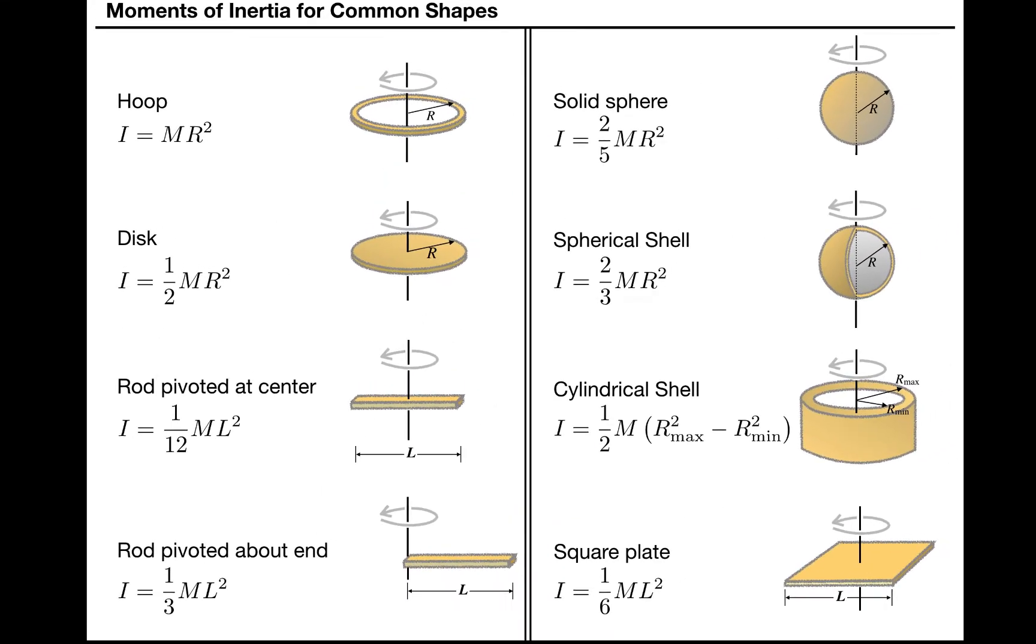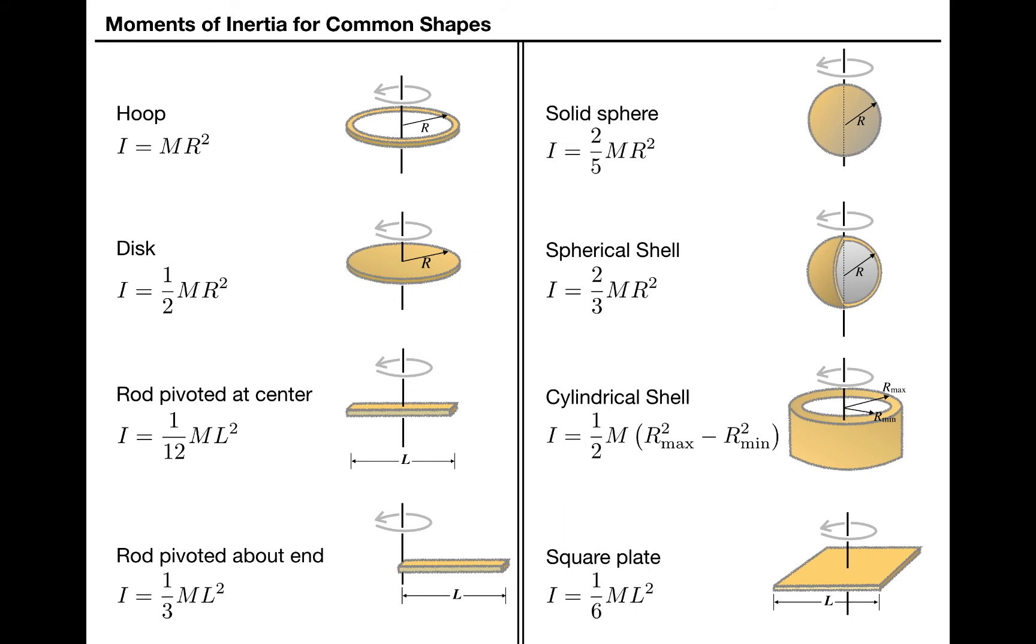Now, you want to keep this table handy, and you should probably memorize the formulas for the hoop, the disc, and the rod, because these shapes come up so often. You'll also eventually want to learn how to derive the formulas for those same objects. The right-hand side of the table is interesting and useful, but you won't need to memorize those formulas.